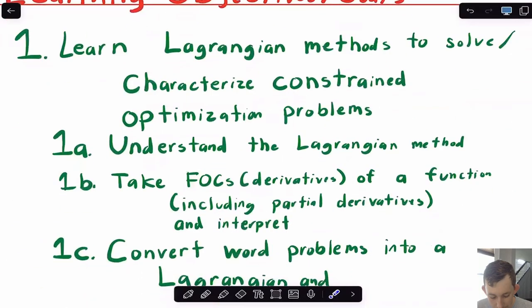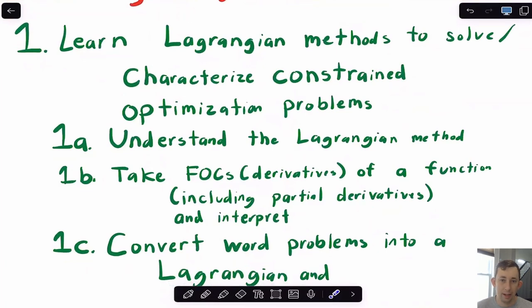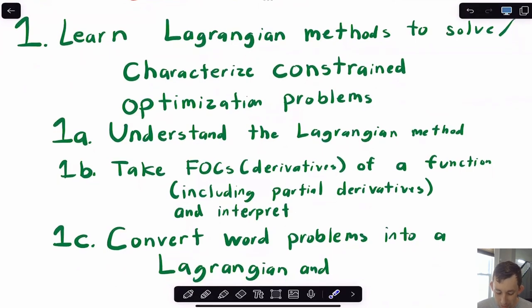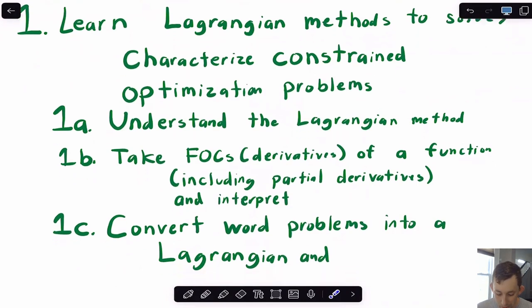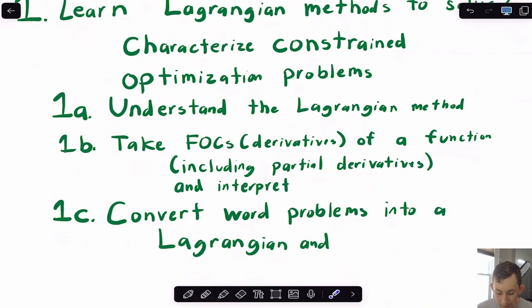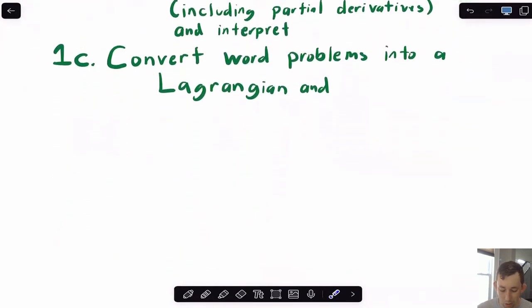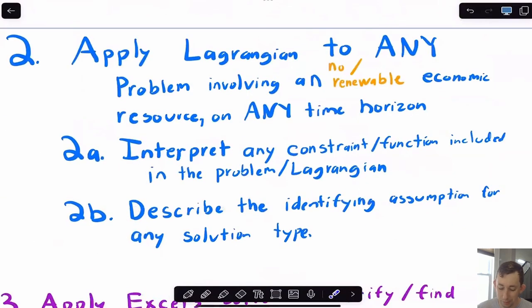So just to get right into it, the goal of this series is basically what the goal of that class was. And mainly it's to learn the Lagrangian method of solving constrained optimization problems and applying that method to environmental problems, mainly related to fishing and forestry. So what we're going to do first, the first couple of videos are just going to be about the Lagrangian methods. Not everyone has used Lagrangian optimization in their undergrad econ program. So what these first videos are going to do is just teach you how the Lagrangian method works, give you some examples, give you some practice playing with the Lagrangian, as well as a review of derivatives. And so what we're going to do after we know how to use the Lagrangian method, we're going to start converting word problems into Lagrangian, and we're going to start applying the Lagrangian to basically any problem involving a non-renewable or renewable economic resource.